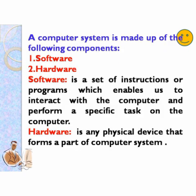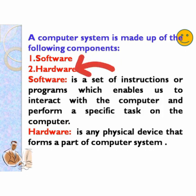So a computer system is made up of the following components, that is software and hardware. Software is a set of instructions or programs which enables us to interact with the computer and perform a specific task on the computer. Hardware is any physical device that forms a part of a computer system. So we will discuss briefly.